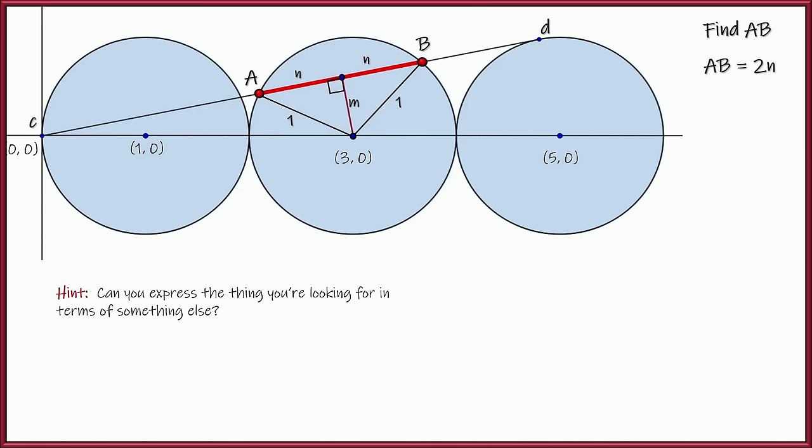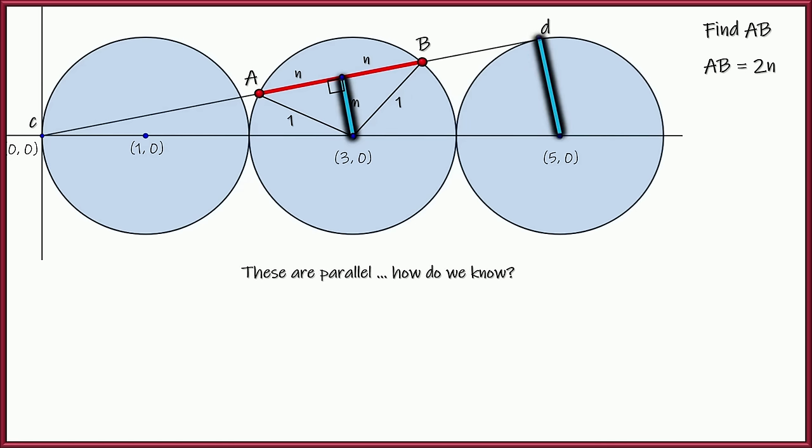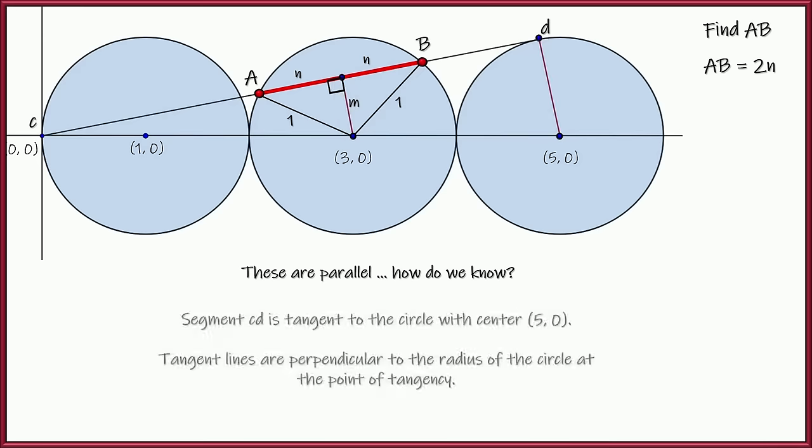All right, now the other thing is these problems rarely give you information that you don't have to use. So CD is tangent to the circle over there with the radius of 1 with the center at 5, 0. So if I draw that radius, I know it's perpendicular because tangent lines are perpendicular to the radius at the point of tangency. That means that these two line segments right here, these two are parallel to each other. And the reason I know that is they're both perpendicular to the same exact line. CD is tangent, so tangent is perpendicular to the radius at the point of tangency.